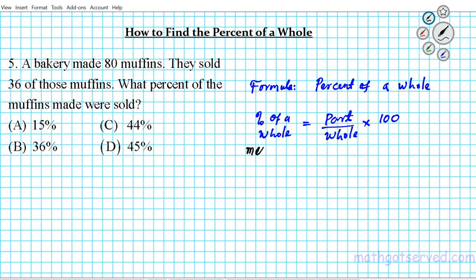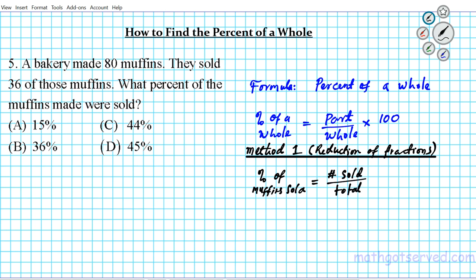Method one, we're going to use reduction of fractions. In this particular case, let's adapt this formula to the particular scenario that we are dealing with. So what we're looking for is percent of muffins sold, which is going to be number of muffins sold divided by total. This will give us the fraction sold as part of a whole, multiplied by 100.